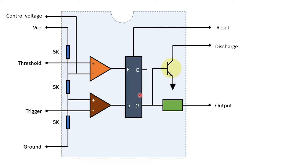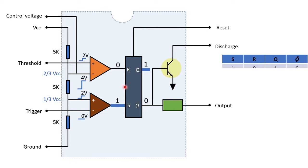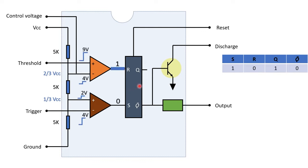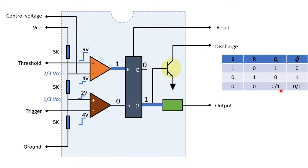In IC555, a SR flip-flop (also called RS flip-flop) is used. There are two inputs: set and reset. When the input to the SR flip-flop is 1 and 0, irrespective of the previous condition, the output will be 1 and 0. If the input is 0 and 1, then irrespective of the previous condition, the output will be 0 and 1. If both inputs are 0, the output will not change — it will reflect its previous state.